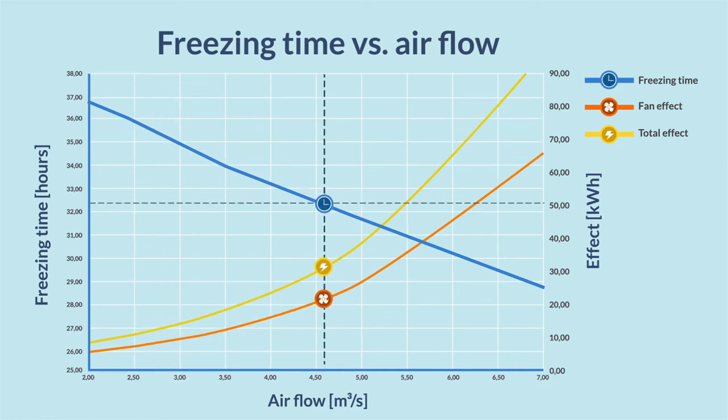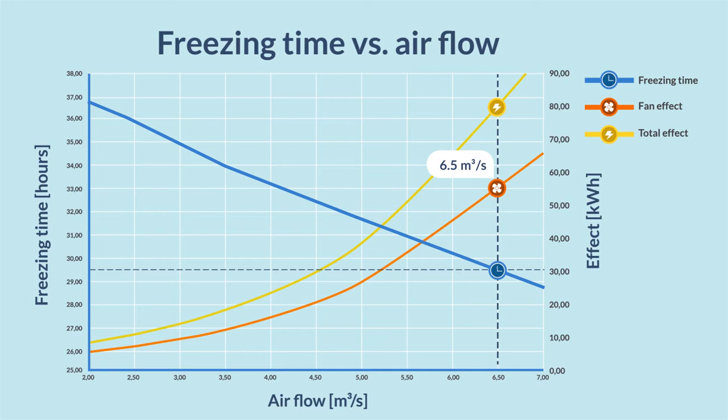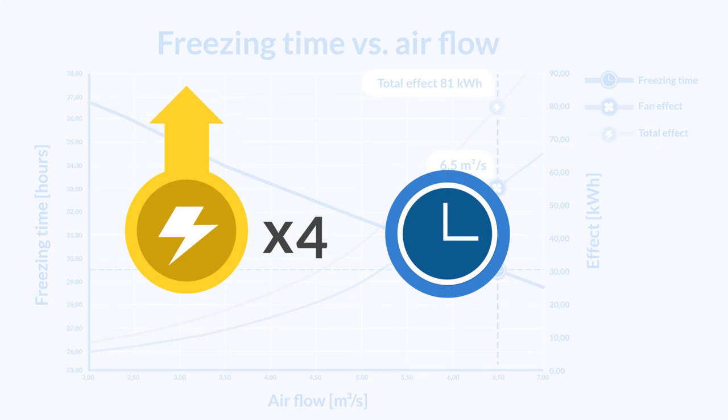When increasing air flow to 6.5 cubic meters per second, the freezing time shortened from 36 hours to 29.5. However, the energy consumption increased to 81 kilowatts, a shocking seven-fold increase, just to reduce the freezing time by 6.5 hours, or less than 20%.